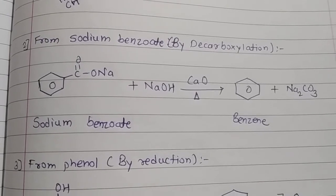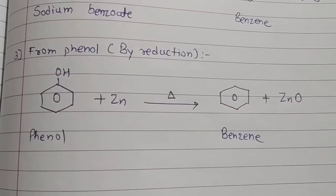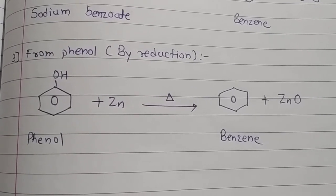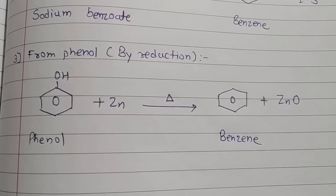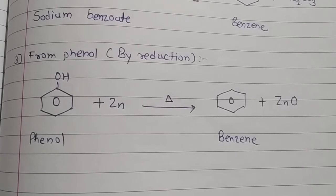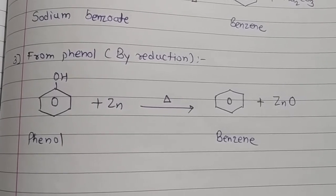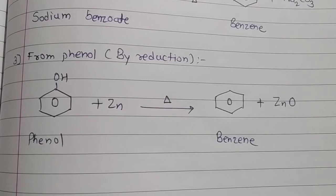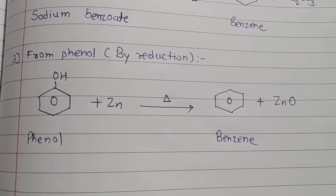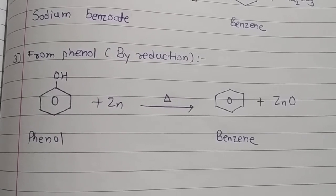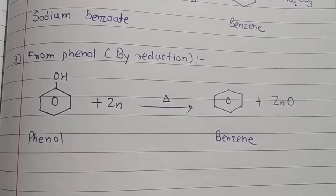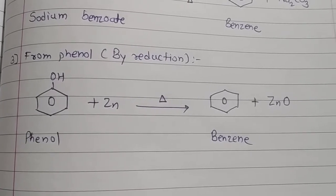The next method is preparation of benzene from phenol. Phenol is C₆H₅OH, and by reduction using zinc metal we get benzene. Phenol is passed through zinc metal and we get benzene as the product and zinc oxide as the byproduct. Reduction is removal of oxygen or addition of hydrogen — here removal of oxygen takes place, and benzene is obtained as the final product.